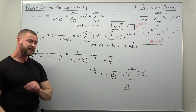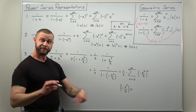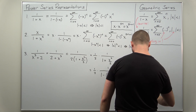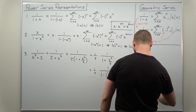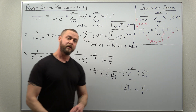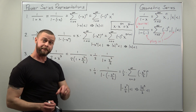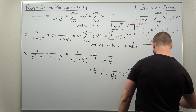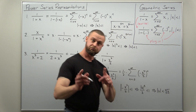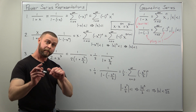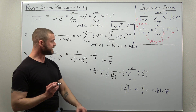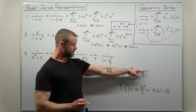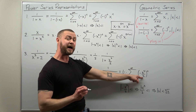Simplifying the interval takes a few steps. First, the absolute value of negative one is just positive one. Then we write the absolute value of x cubed over two less than one, multiply the two over, and take a cube root to get the interval of convergence for x.